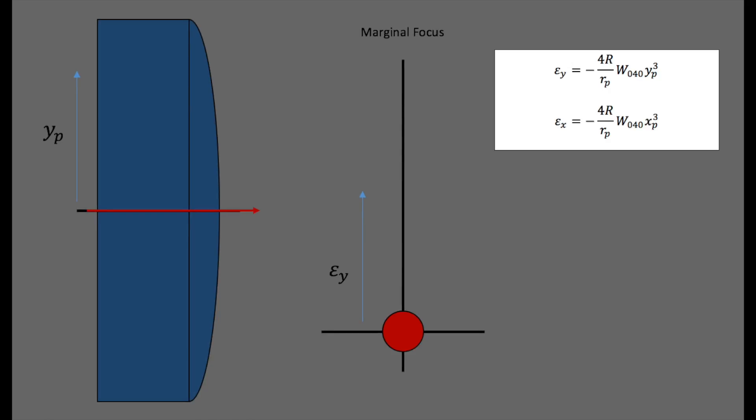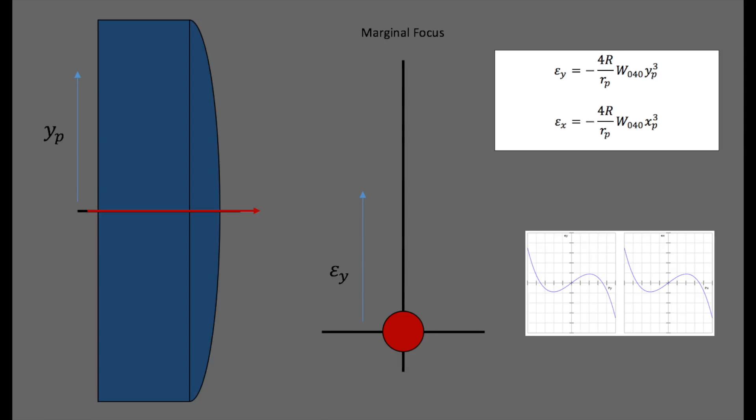The transverse ray errors are cubic with respect to the incident pupil coordinates and can be presented with ray fan plots.